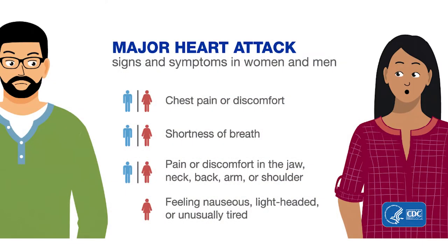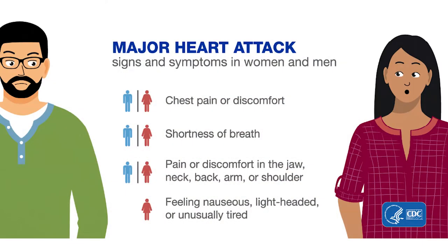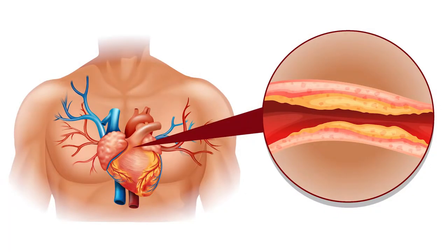Heart disease affects how the heart functions and refers to several types of heart conditions. Coronary artery disease is the most common type of heart disease. For many people, the first sign is chest pain or even a heart attack. Heart disease starts when excess fat, cholesterol, calcium and other substances in the blood build up on the artery walls.